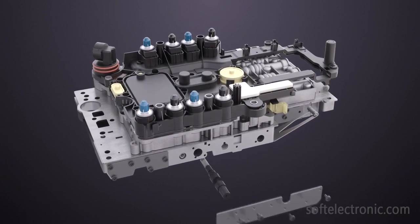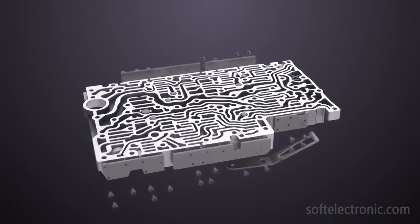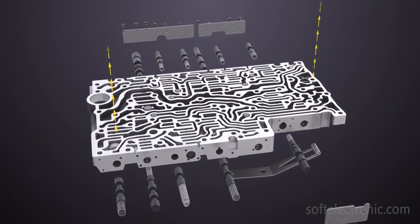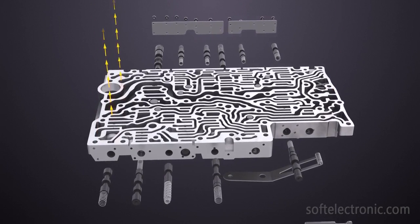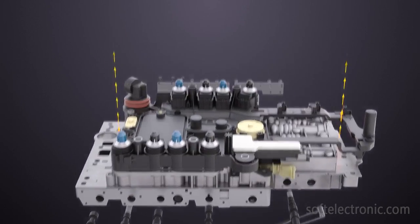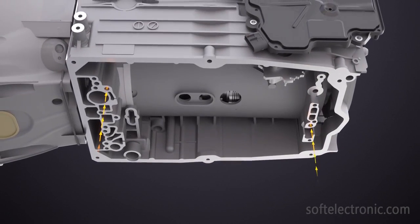After that, depending on the program execution of the control unit, various hydro valves open or close the fluid paths in the plates of the valve body, letting in fluid under pressure. These canals are connected to the clutch packets in the gearbox and torque converter.